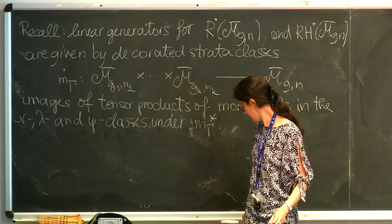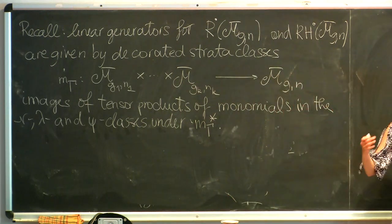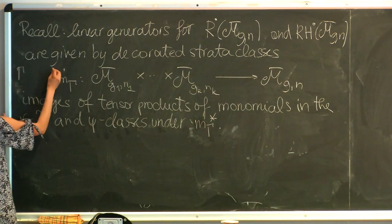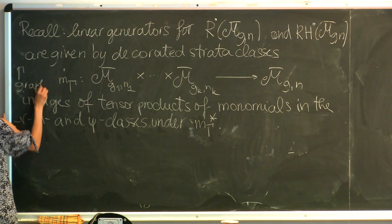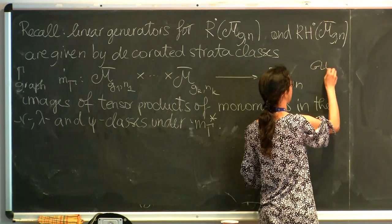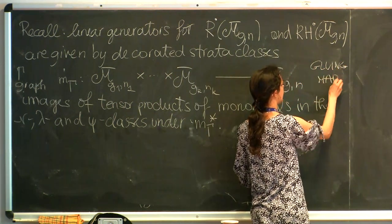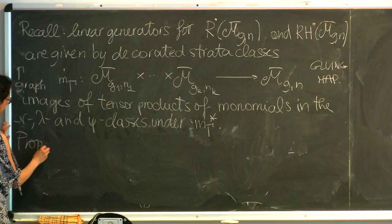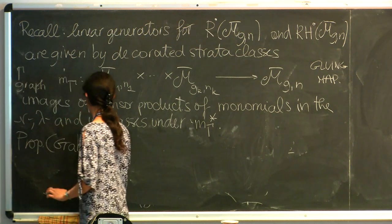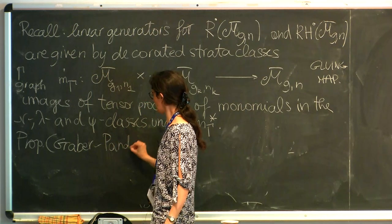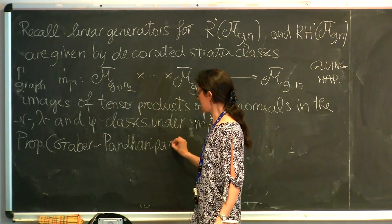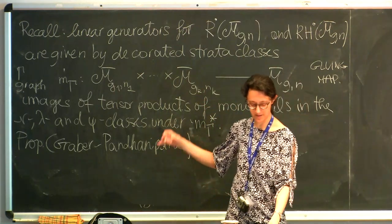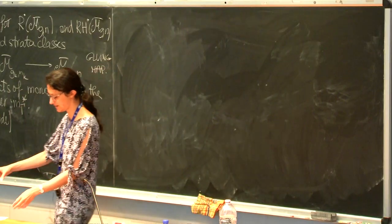I wanted to reassure — so this is the gluing map associated to the graph gamma. I don't think it's... I expect this has been known before, but anyway, it appears first in explicit form in the same paper of Graber and Pandharipande, which is devoted to the construction of non-tautological classes.